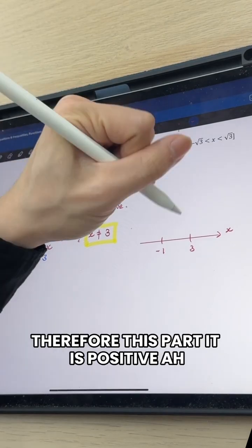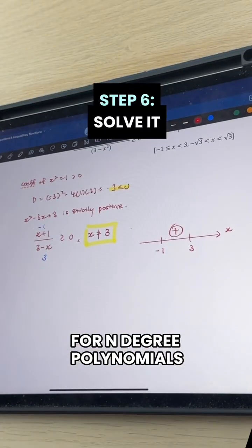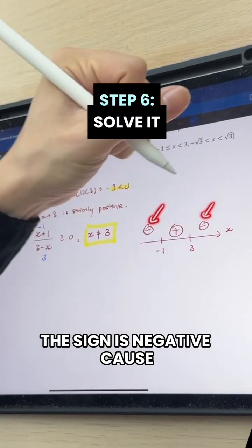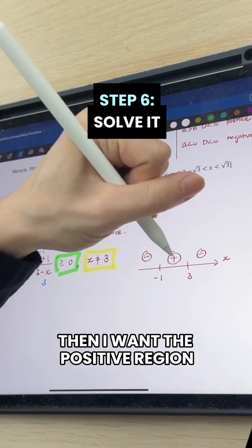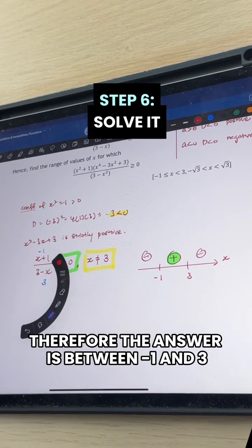We can see the left hand side is 1 third. Therefore, this part, it is positive. For nth degree polynomials, the sign is negative because the signs are alternating. So we see x more than or equal to zero with our number line here. Then I want the positive region. Therefore, the answer is between negative 1 and 3.